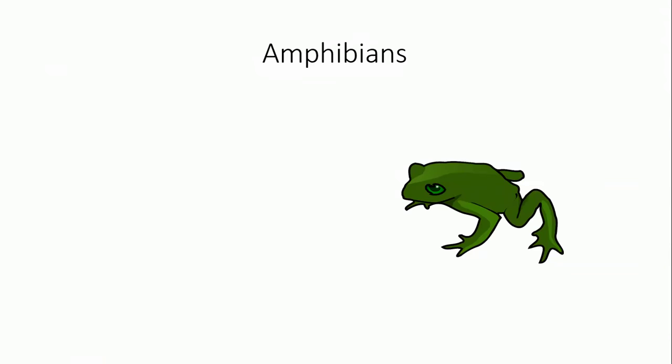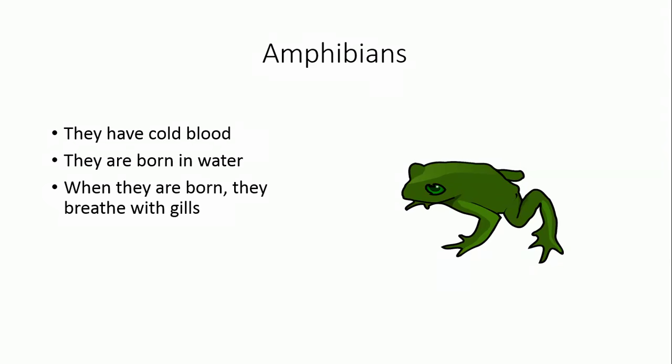Amphibians. Amphibians have cold blood. They are born in water. When they are born, they breathe with gills. They live on both land and water, and they lay eggs.